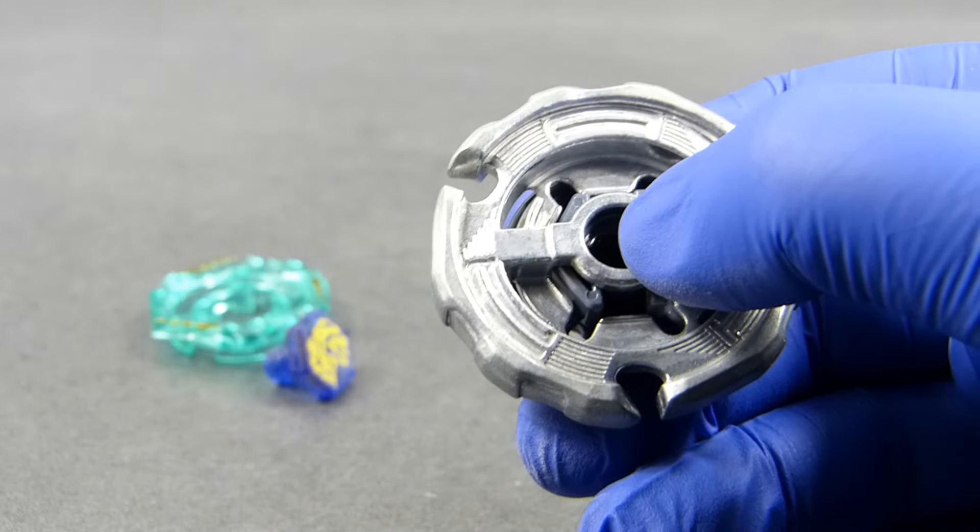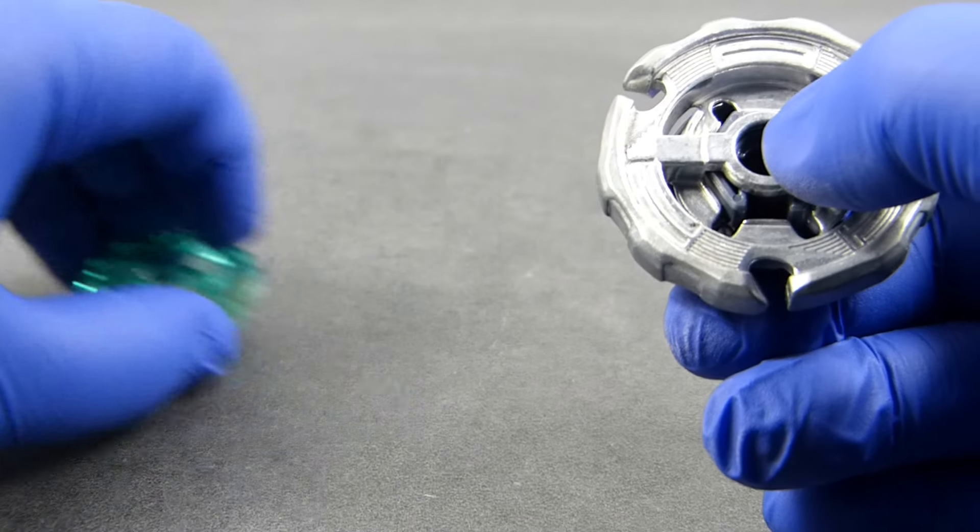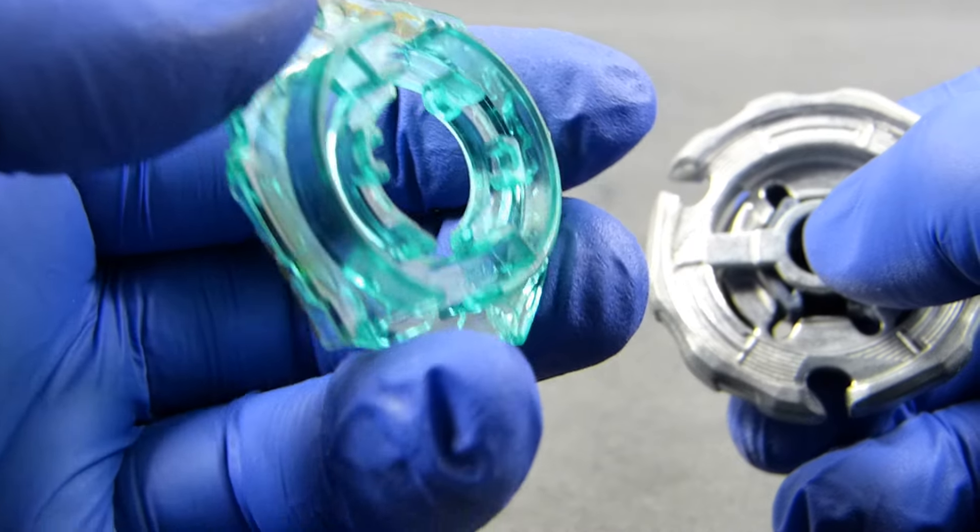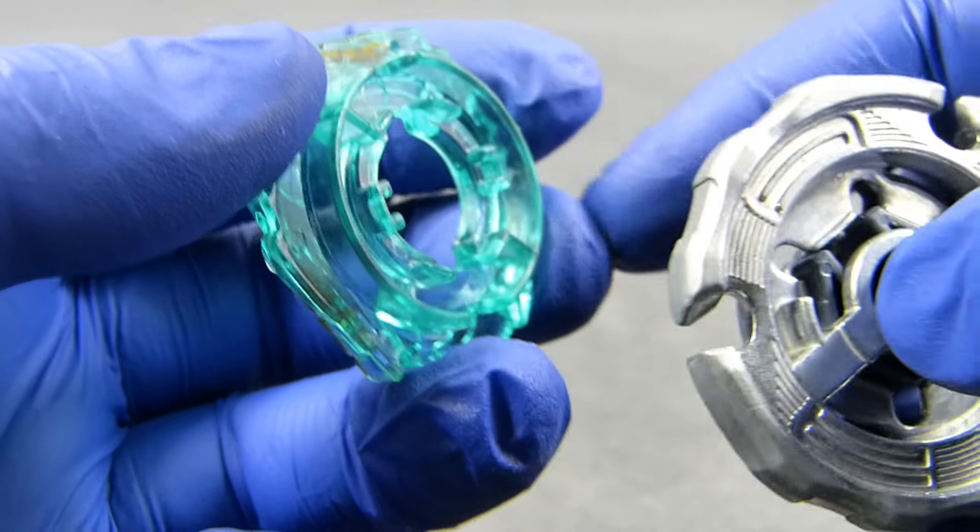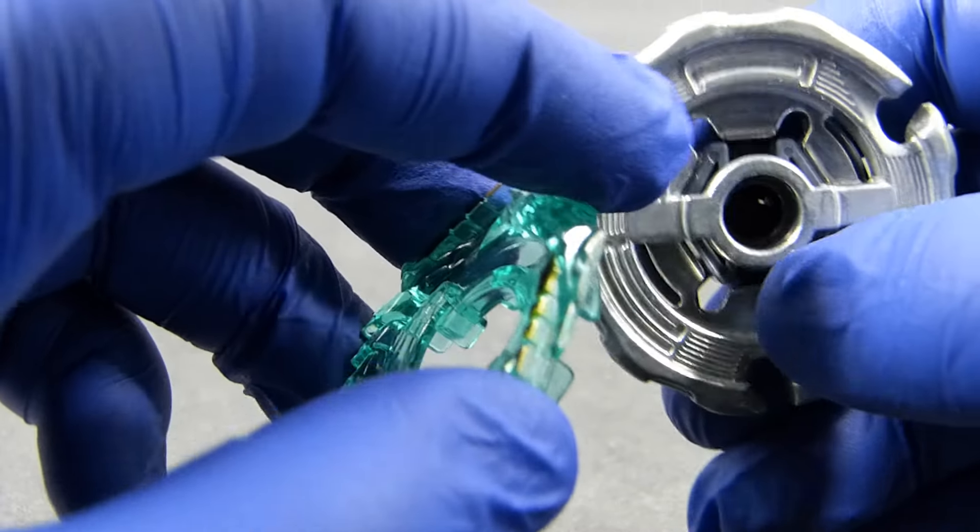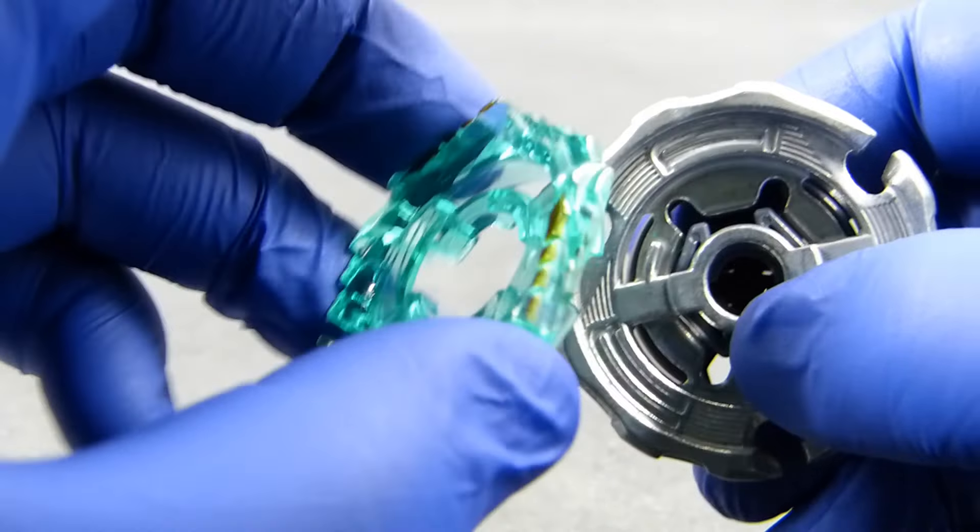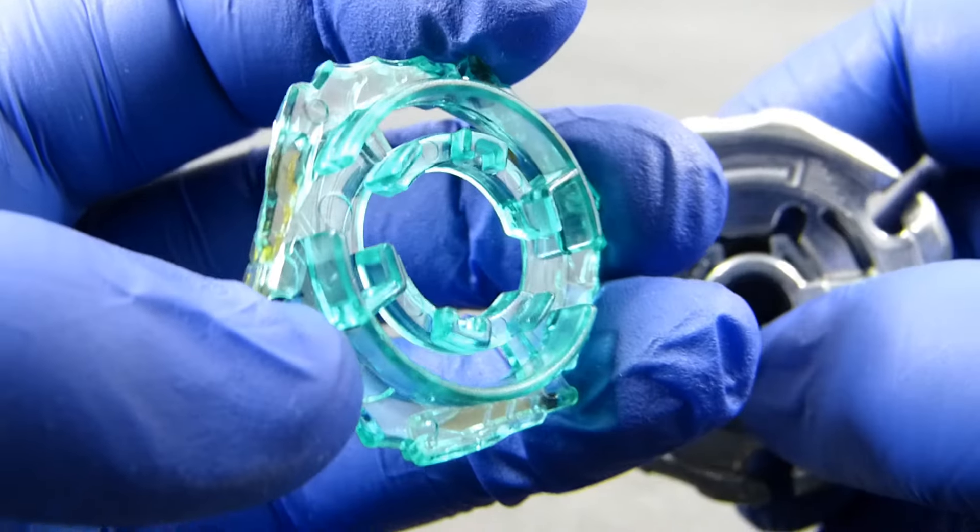And that is because there are small tabs facing bottom on the energy wheel—this one and this one. And these are the things that will actually go into these cutouts in the spin track. So we have to align them like that.